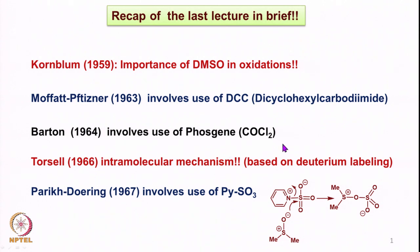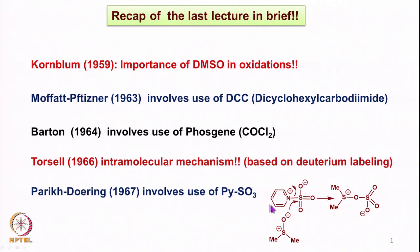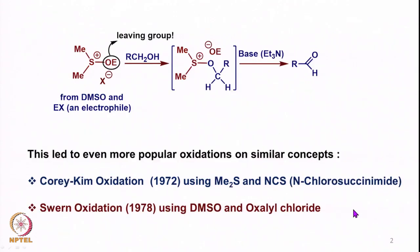In all these cases, the mechanism was reported by Torcel, who used deuterium labeling to confirm that the reaction proceeds by an intramolecular mechanism and not an intermolecular mechanism — something we had discussed in the first lecture on chromium-based oxidation. Parikh and Doering then reported activation of DMSO using pyridine sulfur trioxide complex, where the sulfur species acts as an electrophile to activate DMSO and form an intermediate that allows oxidation to take place.